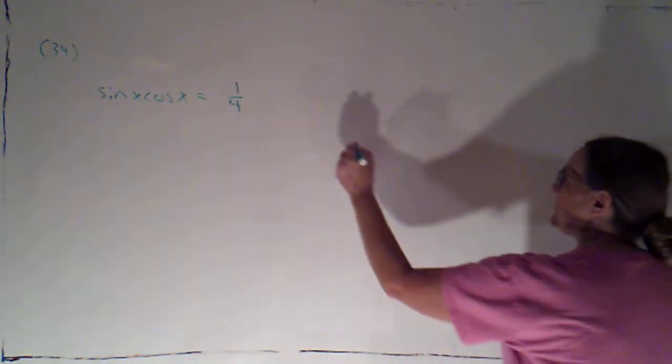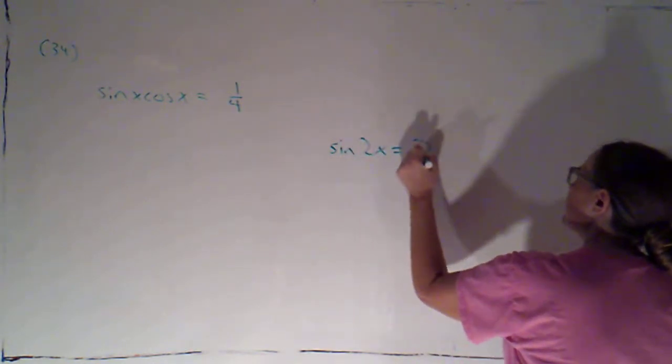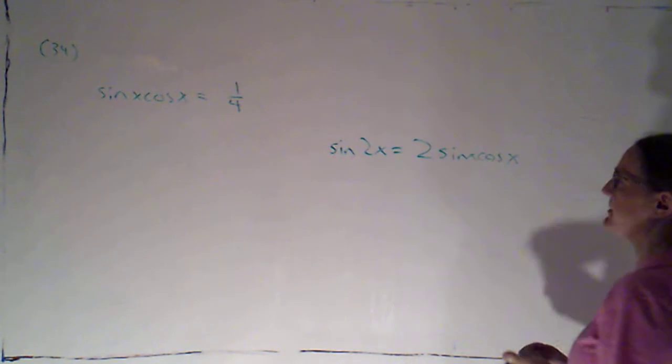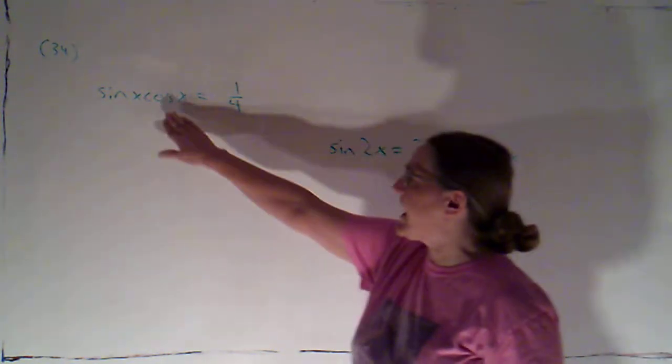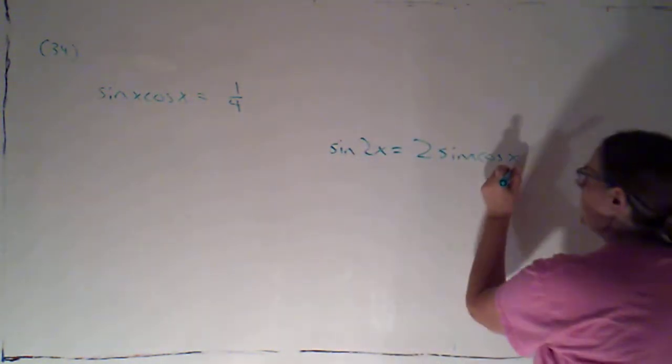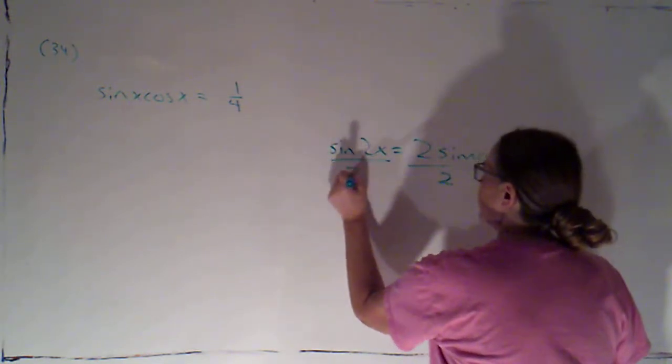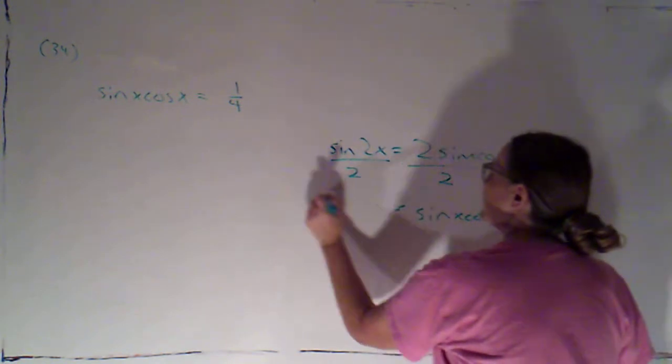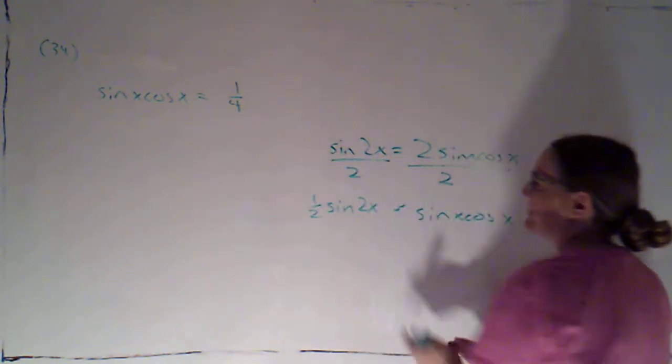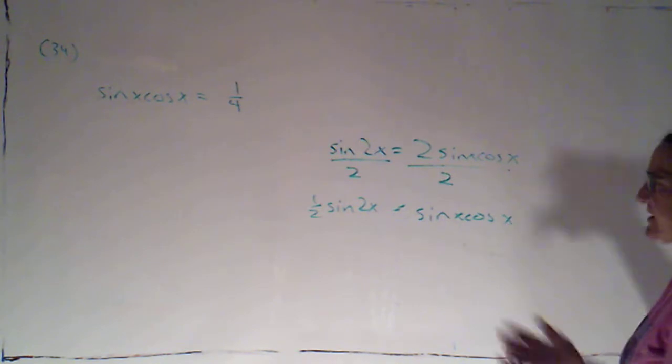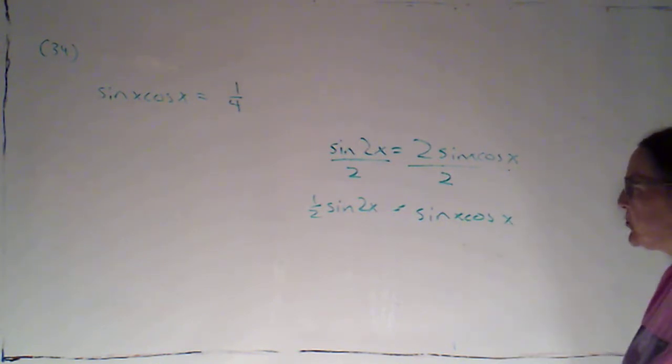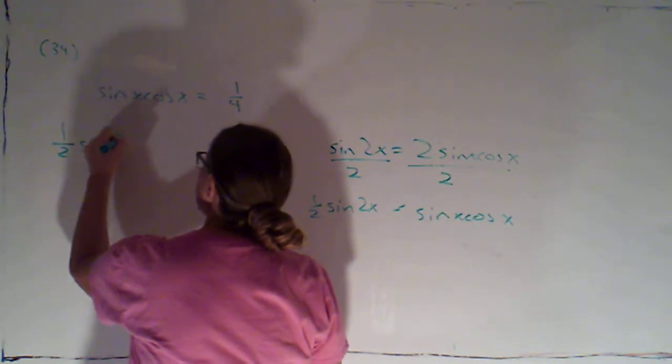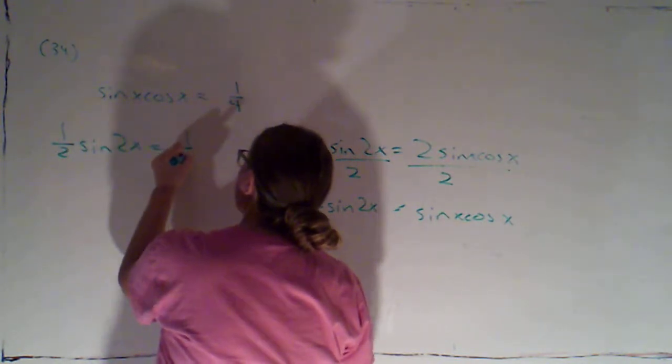And I remember that sine of 2x is 2 sine x cosine x. Now that's almost what I have here. I only have one copy of that, so essentially that means that sine x cosine x is one-half of sine 2x, or sine 2x over 2. Okay, so I'm going to copy it that way.